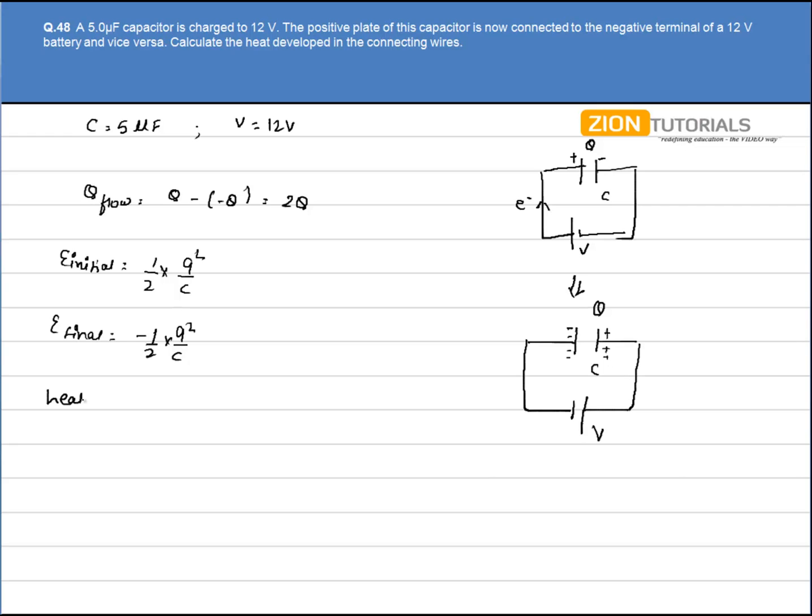Heat developed will be E_final minus E_initial. So we have minus of half of Q²/C minus half of Q²/C. That comes out to be minus Q²/C or it can be written as minus 2 times Cv².